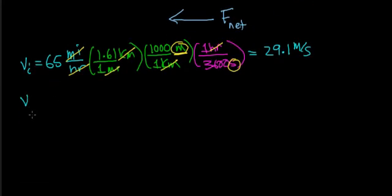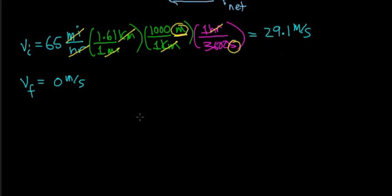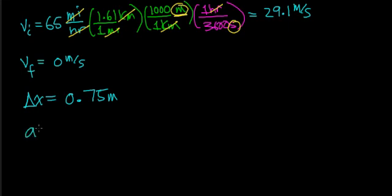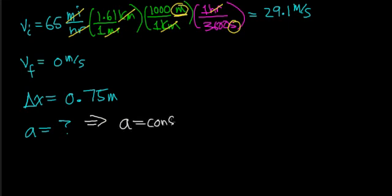Our final velocity in this case is going to be 0 meters per second — the car collides with a solid object, in this case a tree, and comes to a stop; the tree provides the force to stop the car. The distance over which this car is decelerating is going to be 0.75 meters. What we're trying to calculate is the acceleration of the car — that is, how fast does the velocity of this car change as it's making a collision with a tree. We're going to assume that the acceleration is constant, meaning the velocity changes at a constant rate.